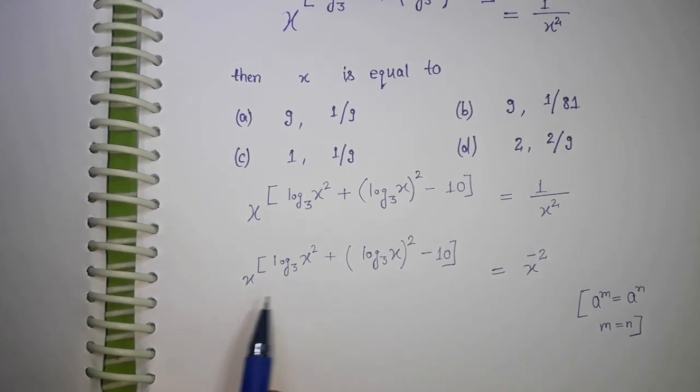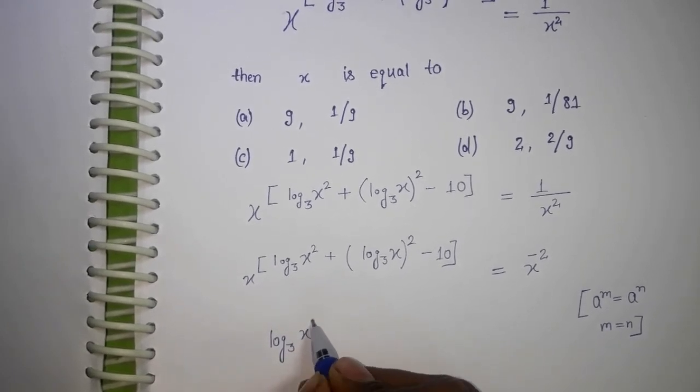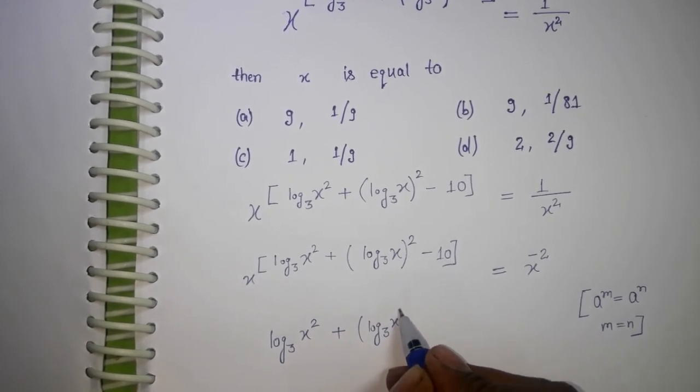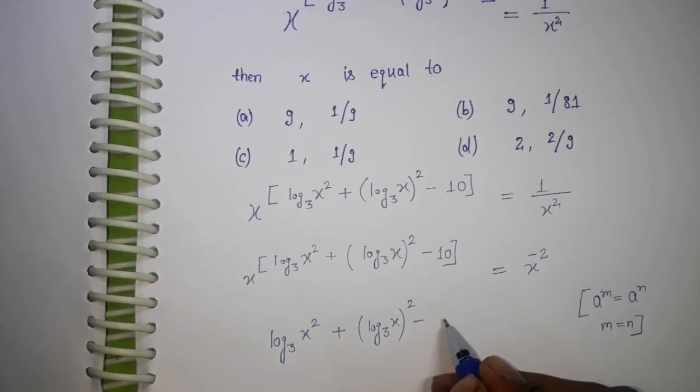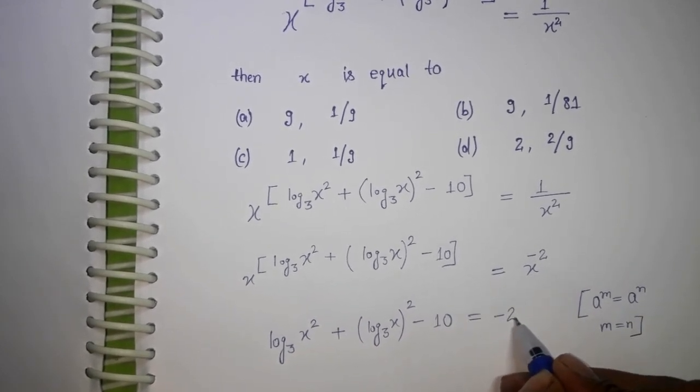Here we have this base and this base. These two bases are the same, so the powers will be equal. So I'm going to write the powers equal to -2.